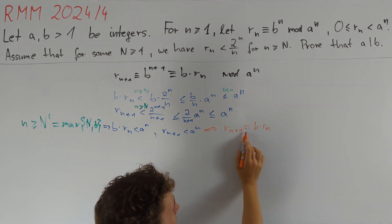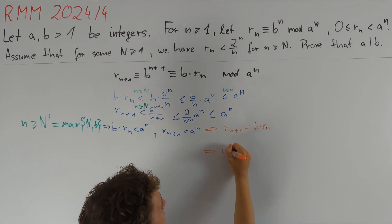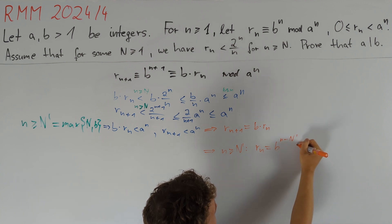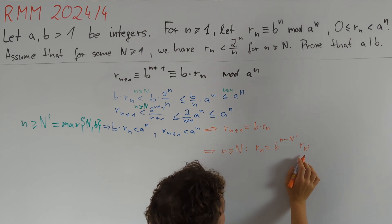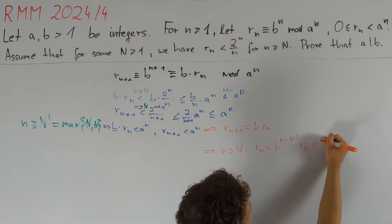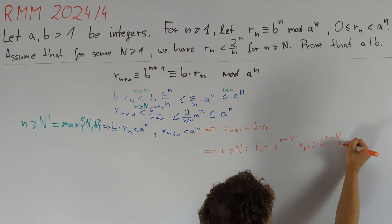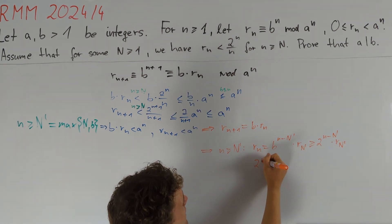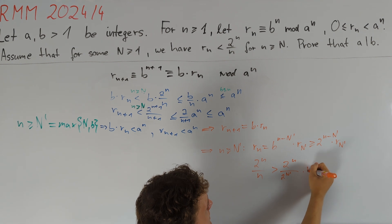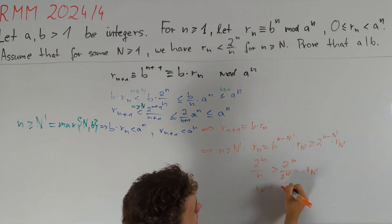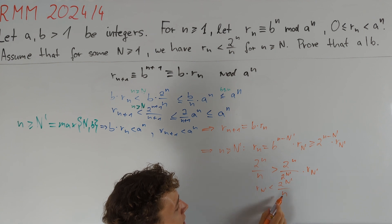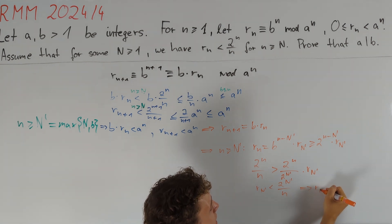We have this equality for any n ≥ n', and therefore induction tells us that for n ≥ n', we have r_n = b^{n - n'} times r_{n'}. This should already imply that eventually r_n will grow faster than the upper bound. So let's bound this expression from below by 2^{n - n'} times r_{n'}. We get for n ≥ n': 2^n / n should be greater than 2^n / (2^{n'} times r_{n'}), hence r_{n'} < 2^{n'} / n. Since this is true for all n ≥ n', we can let n tend to infinity, which gives us r_{n'} = 0.